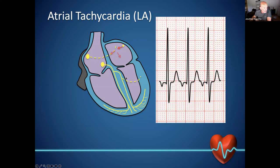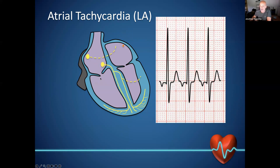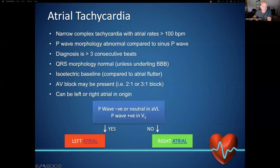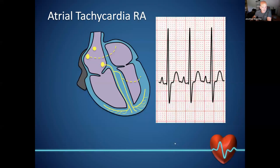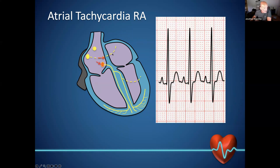Here we have an example of a left atrial tachycardia — we have an inverted P wave. It's actually using Bachmann's bundle in reverse to get into the right atrium before going down to the SA node. That doesn't cause any major conduction issues; we still end up with a P wave morphology in advance of the QRS. For a right atrial example, we often end up with a P wave that looks very similar to the native P wave in sinus rhythm, because we're close to the SA node.